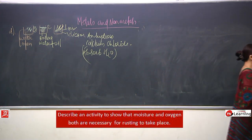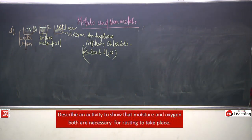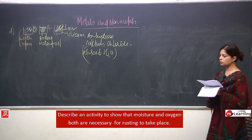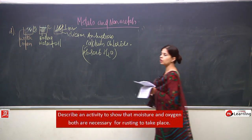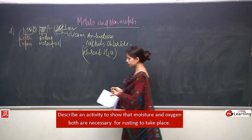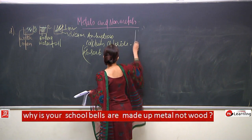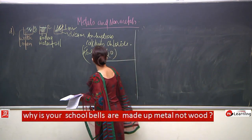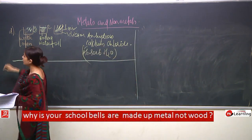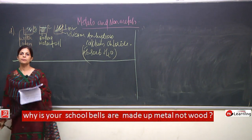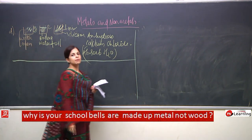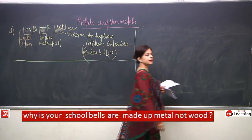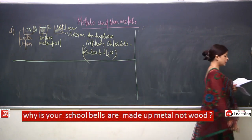Why is a school bell made of metal and not wood? Because metals are sonorous — they produce a ringing sound when struck.